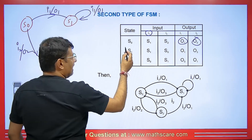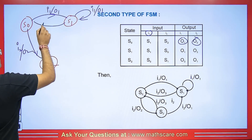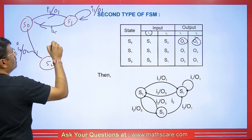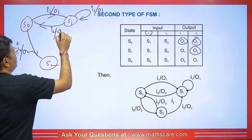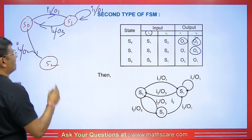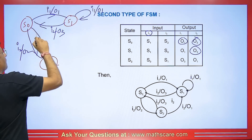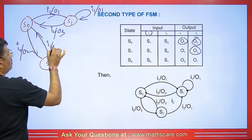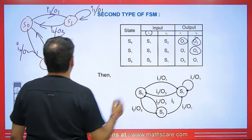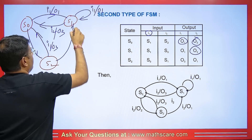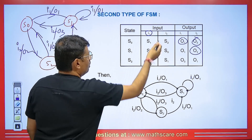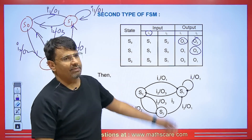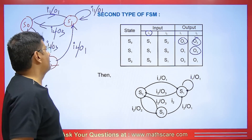S2 going to S0 has input I1 and output O3. S2 going to S1 has input I2 and output O1. This is how we make a state diagram when two inputs and corresponding outputs are given. We can make a diagram of any given table, or work in reverse.